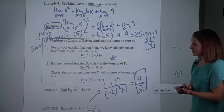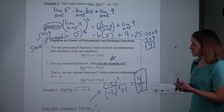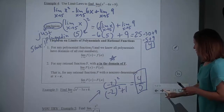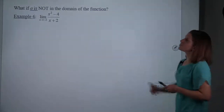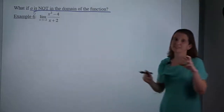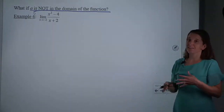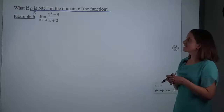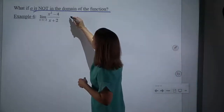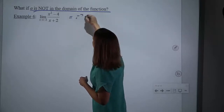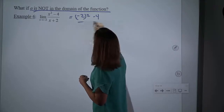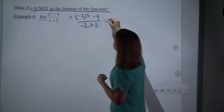That's all your work should look like. Yes, I want to see work, but you're simply plugging in when you can, when it's a nice function. So then the question is: what if a is not in the domain? You said if a is in the domain and it's a nice function, then you get to just plug in. But what if a is not in the domain? So if we try to plug in, we would have negative 2 squared minus 4 over negative 2 plus 2.